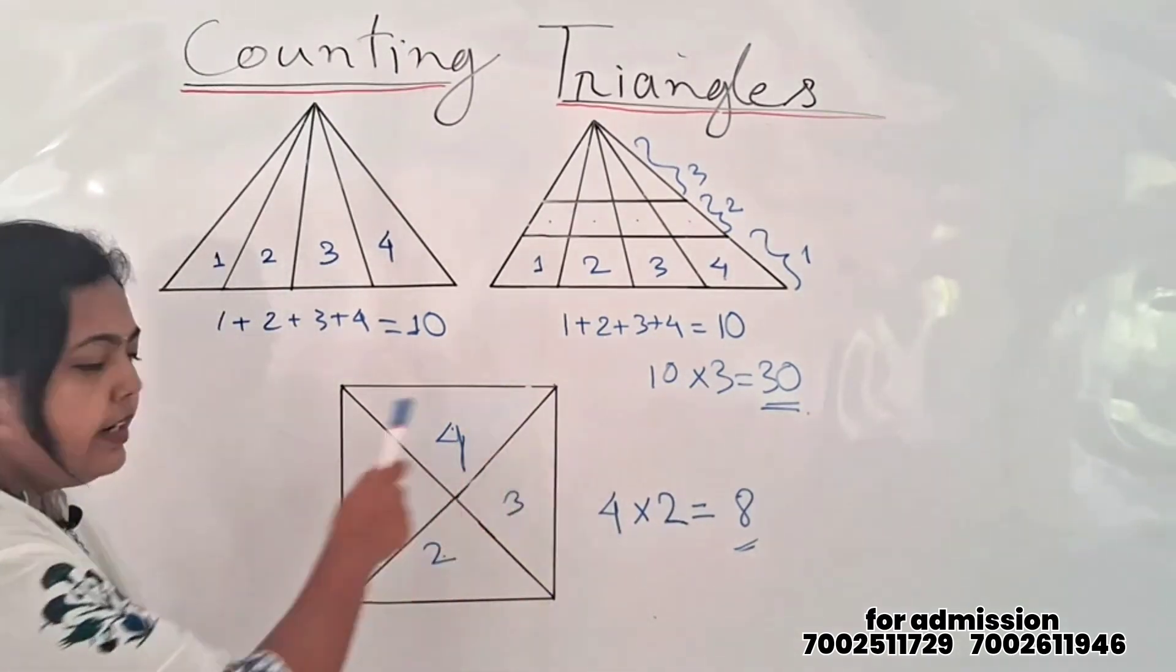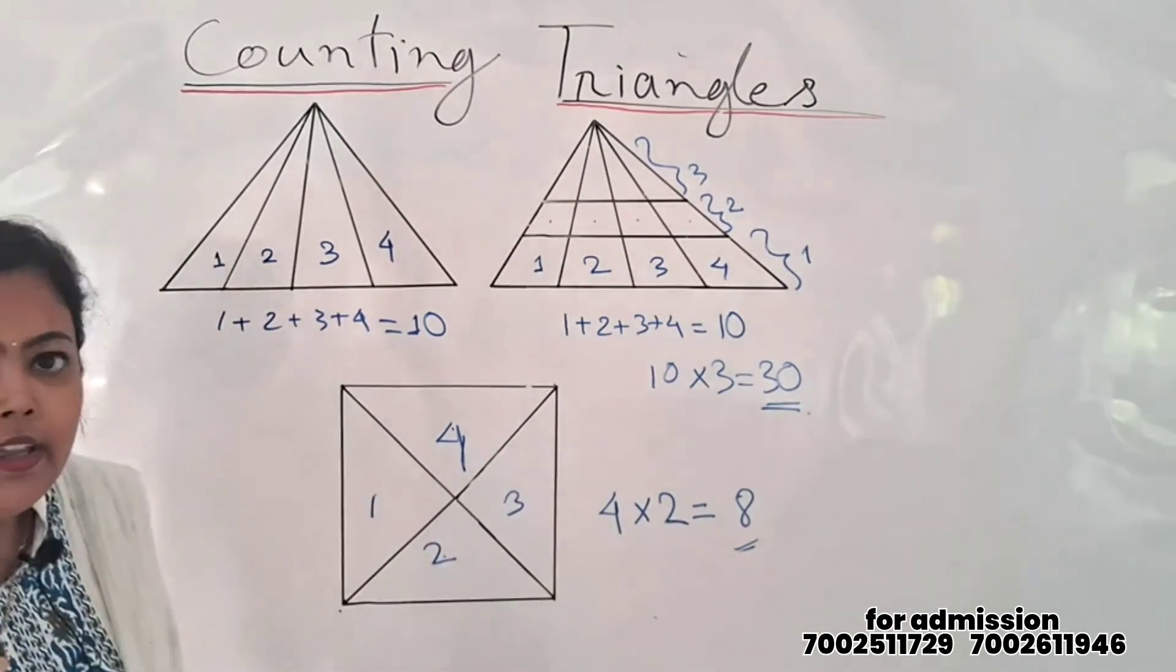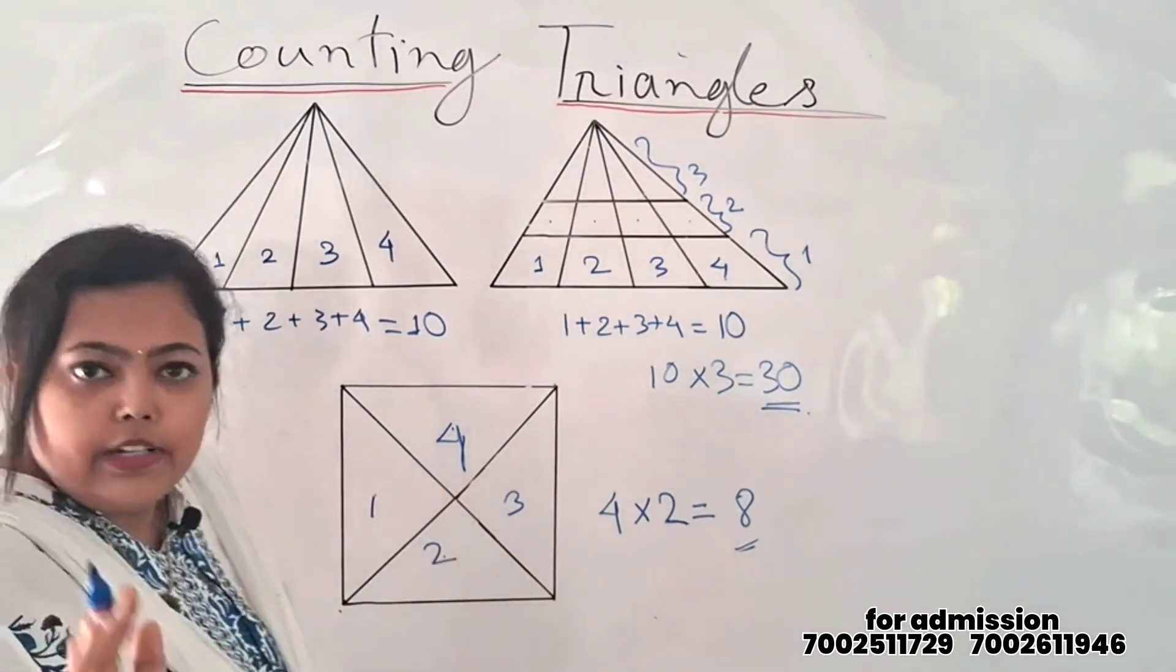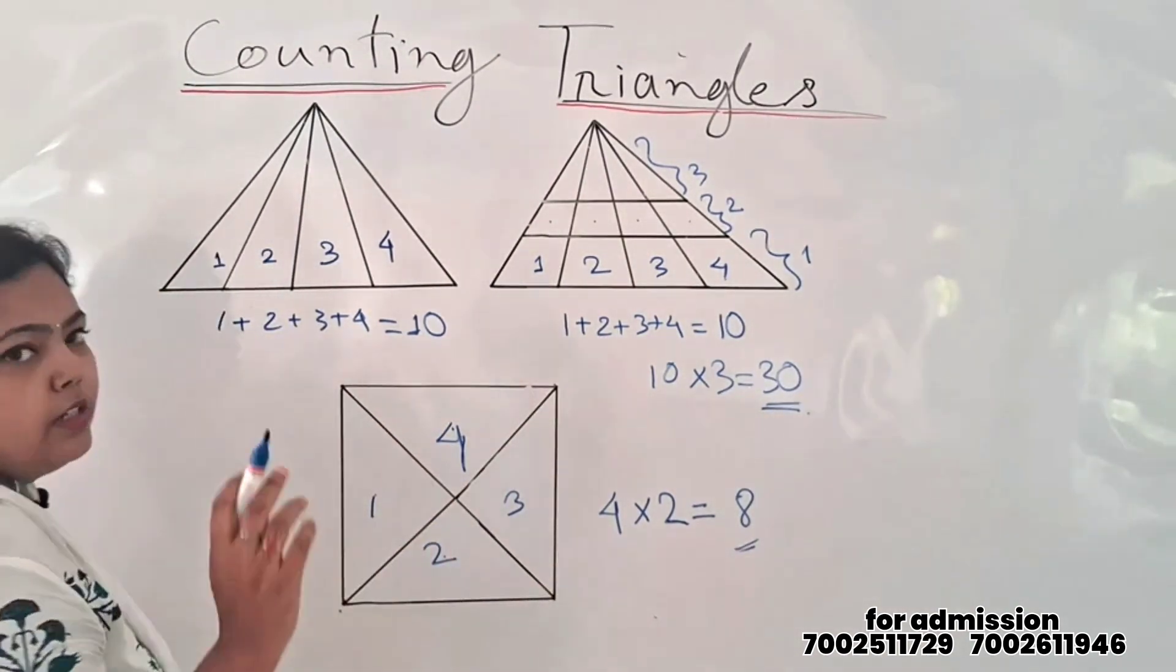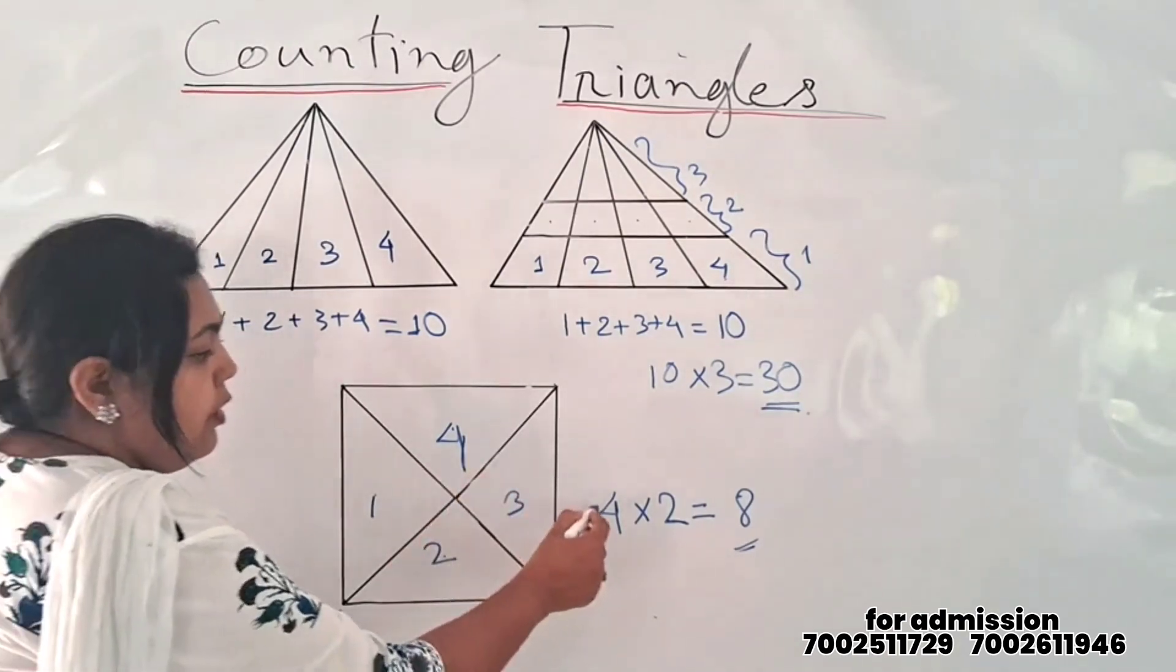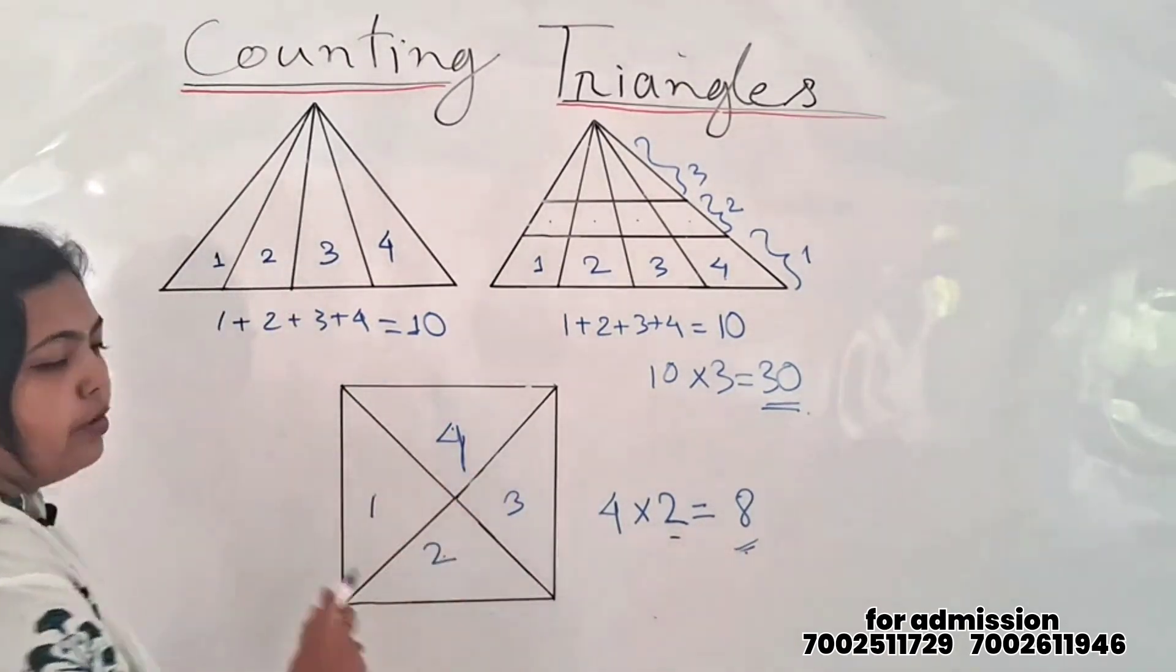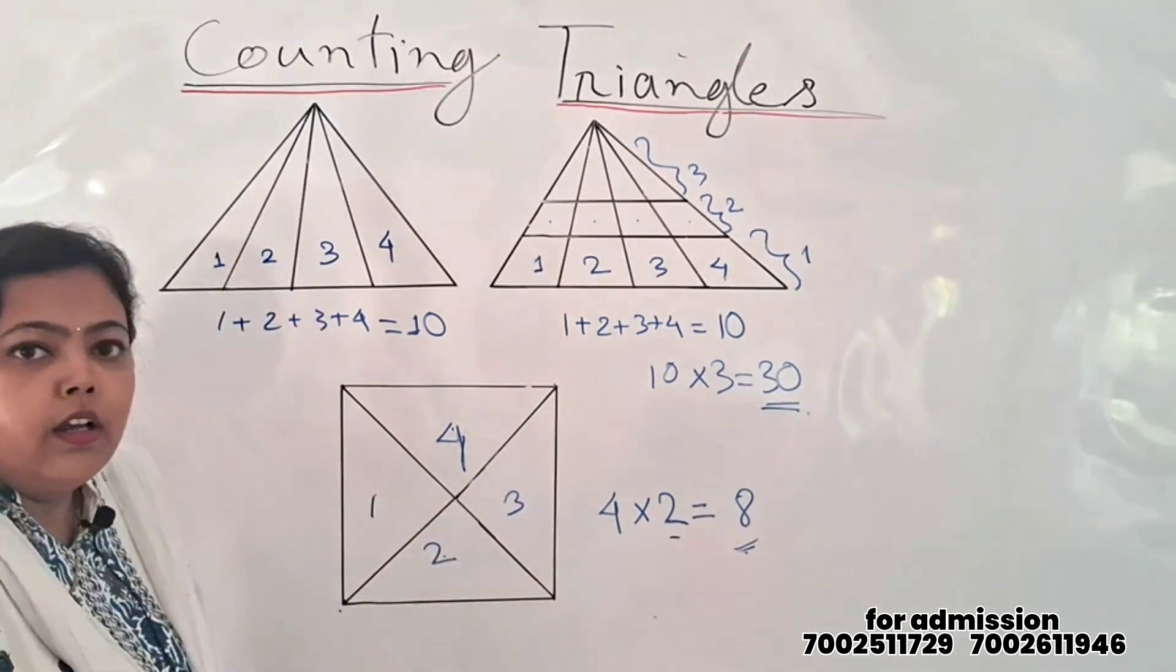When you have a square with this triangle, you can confirm the number is 4. How do we get 4? 4 times 2, you multiply with 1. This is the triangle number.